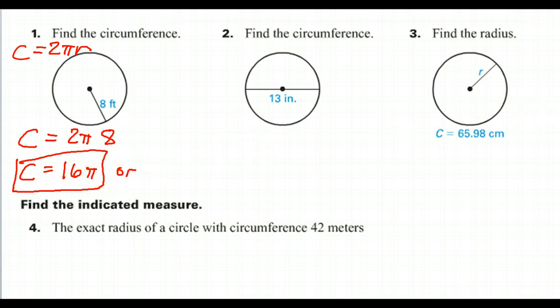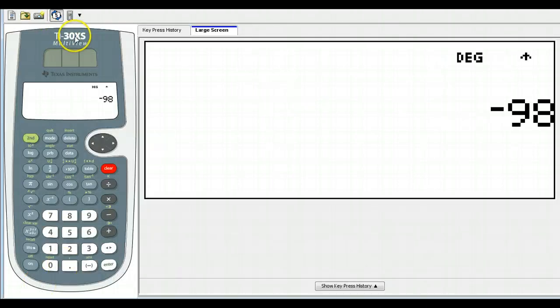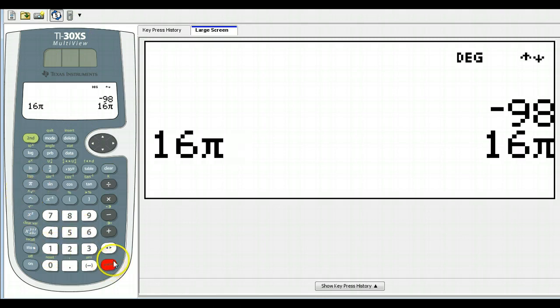If you needed a decimal for some reason, then you could just put that in your calculator. Using your TI-30 XS multi-view, you will notice that the pi button is right here. So if you want to do 16π, then there it is. So if I hit enter,